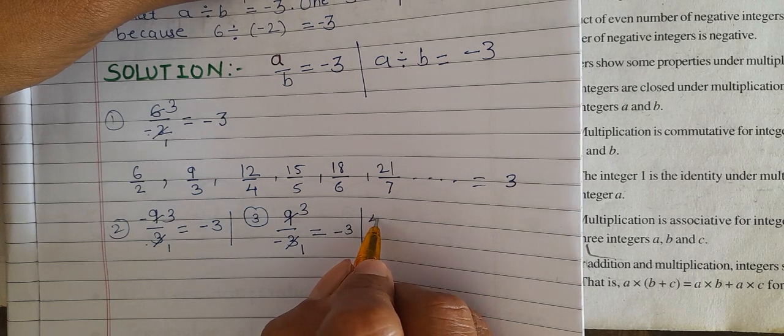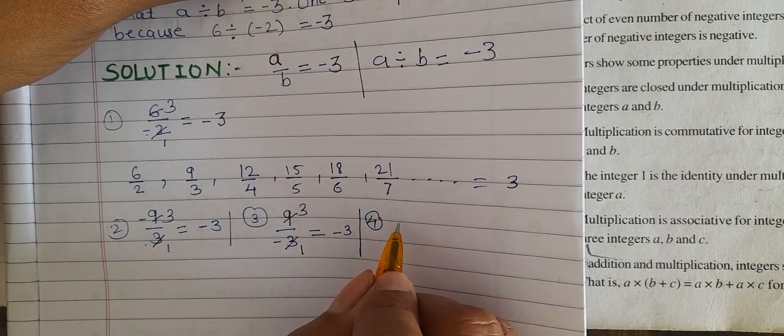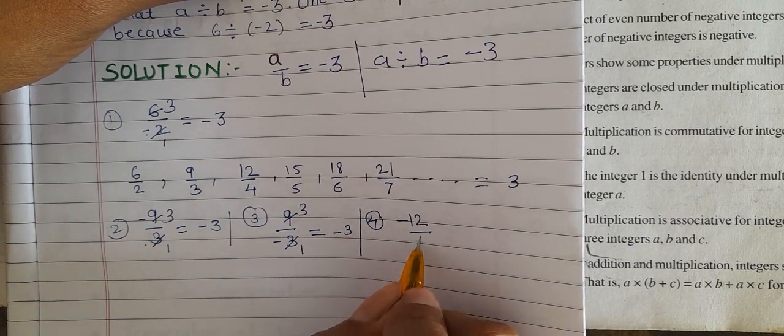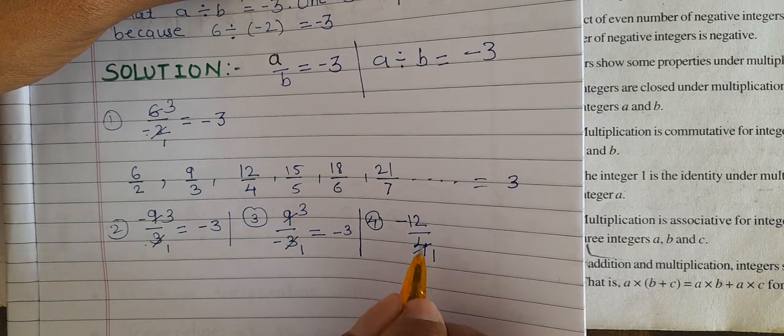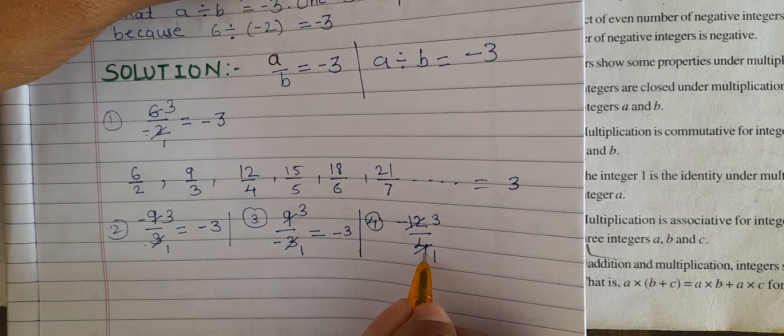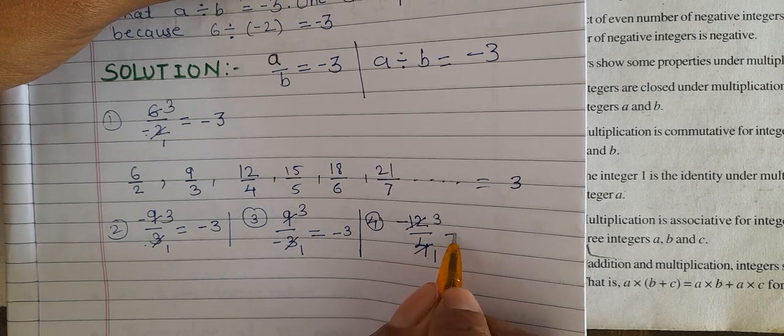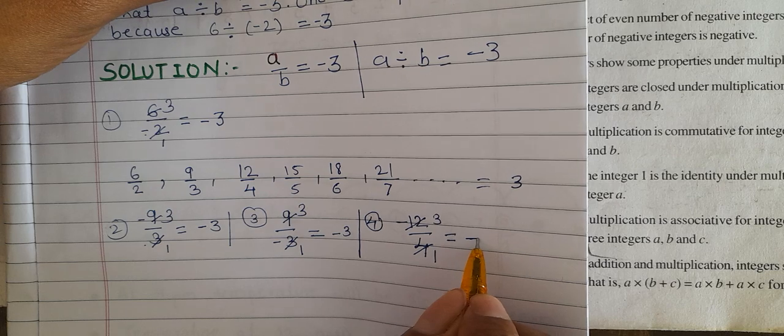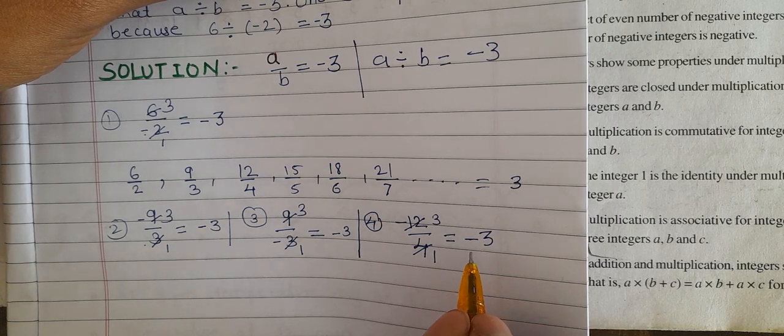Next one, minus 12 divided by 4. 4 times 3 is 12, but with plus and minus, the answer is minus 3.